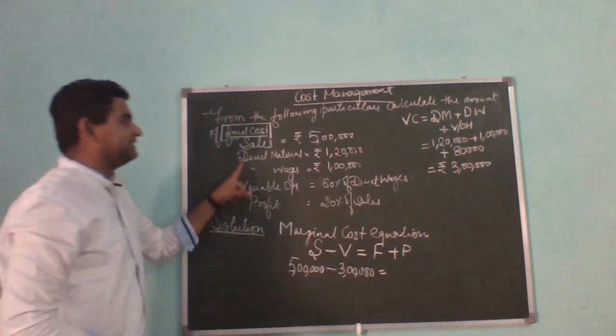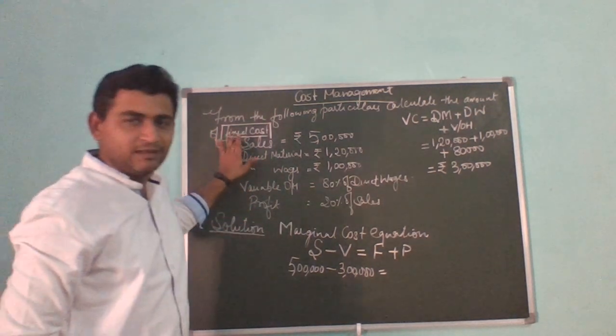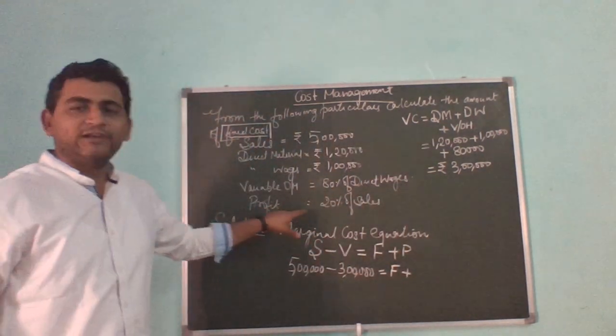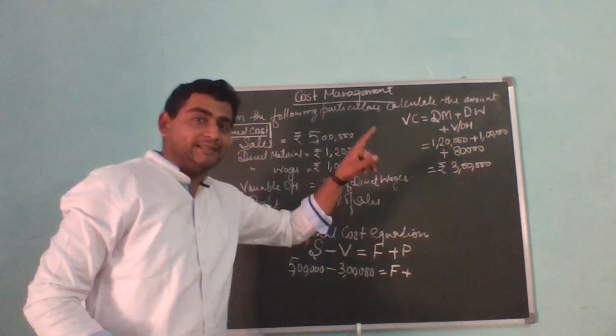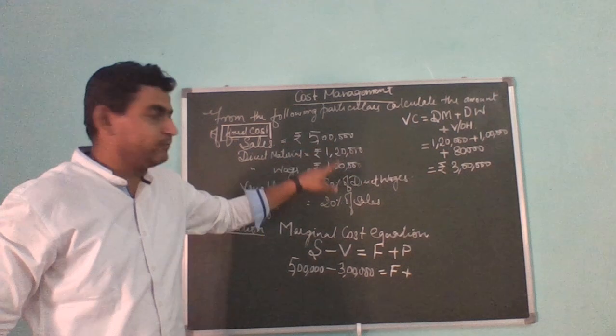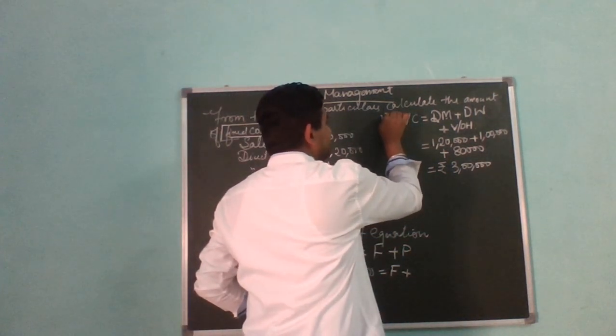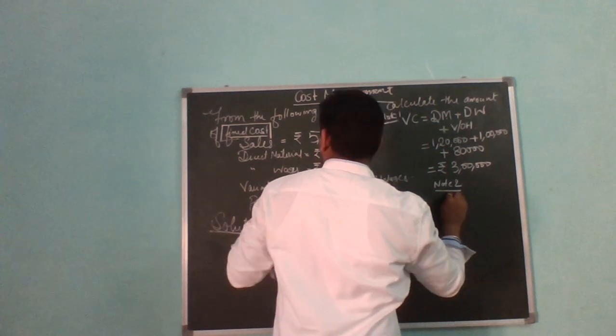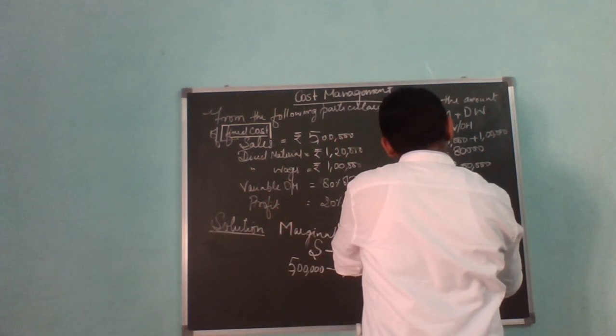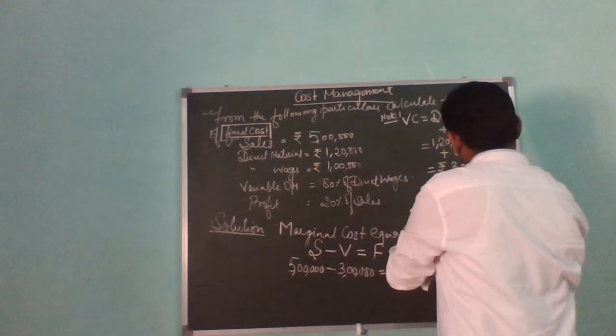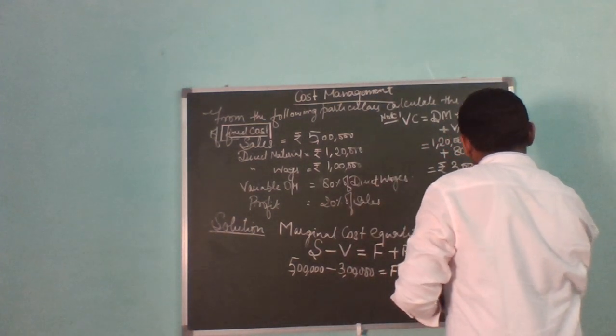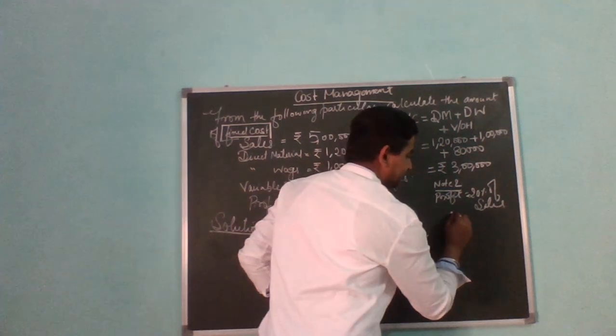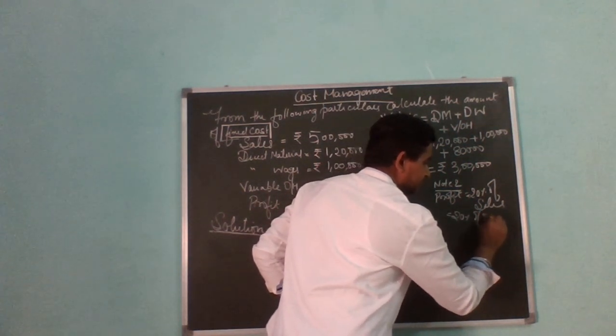This is equal to fixed cost. We don't know fixed cost, so we denote it as F. Plus profit. Profit given is 20% of sales. Sales is given as 5 lakh rupees, so 20% of rupees 5 lakh.